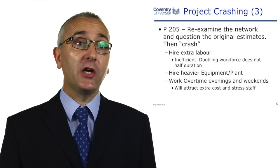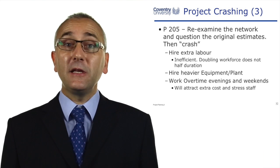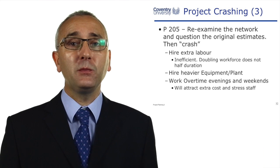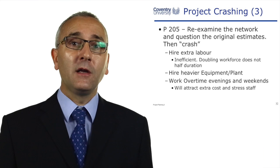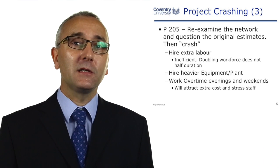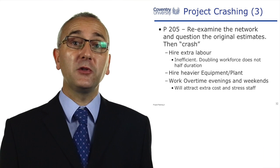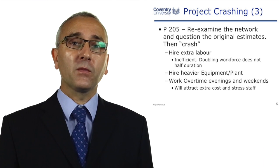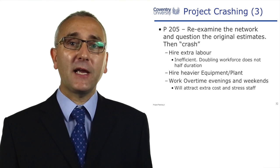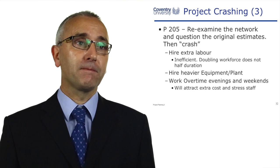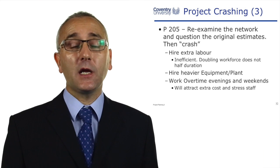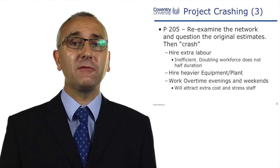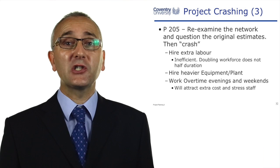Lock suggests hiring extra labour, but points out that it can be inefficient and that doubling the workforce does not mean we halve the duration. In the painting example: we've got 20 hours of work. Put two people on the task — duration might come down. Put a third person on and duration may reduce again. Put a fourth person on and maybe we don't have enough paintbrushes or ladders, so the duration will not reduce. Hiring specialist equipment — Lock is agreeing with Gardner's view there. Working overtime costs money and can stress the staff.